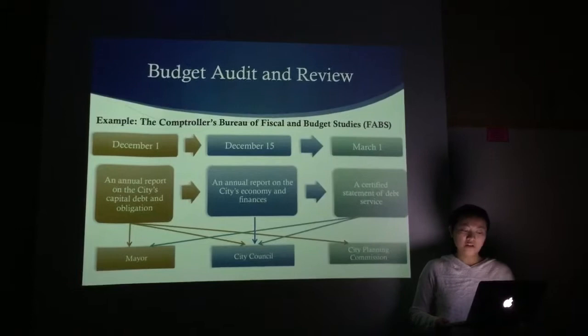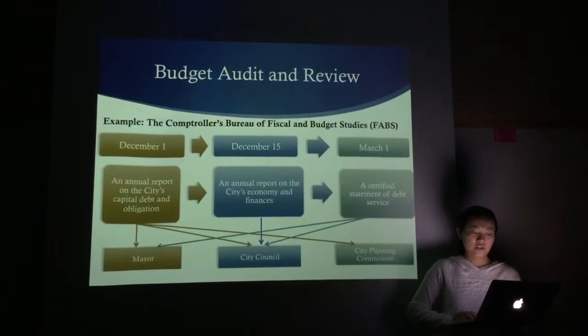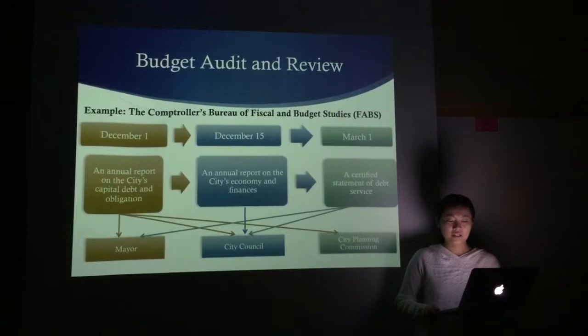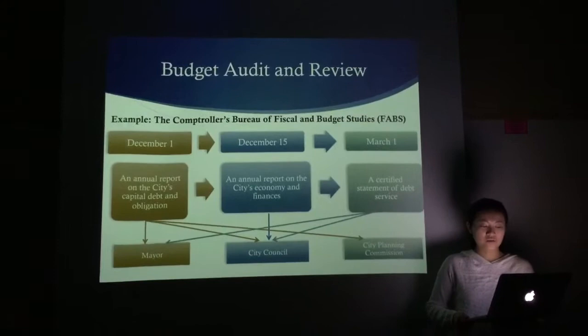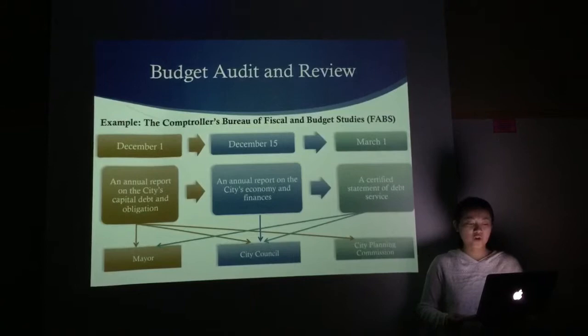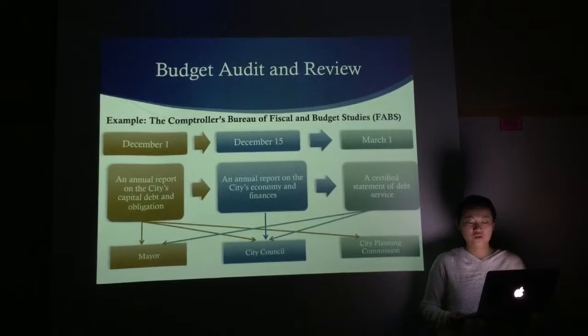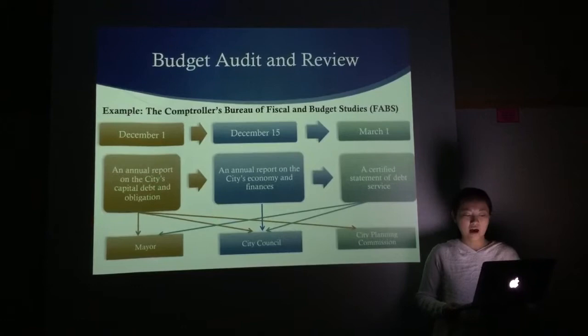The last step is budget audit and review. After budget implementation ends, local governments make reports, undertake audits, and review the concluded fiscal year. I will take the Controller's Bureau of Fiscal and Budget Studies, known as FABS in New York City, as an example to explain the budget audit. FABS monitors the city's revenue collections, expenditures, capital program, debt capacity, and economy. Based on the budget and financial plan documents, FABS conducts an overall review of the main components of the city's budget, focusing on important concerns such as the soundness of the city's fiscal and economic assumptions, changes in expense and capital budget priorities, and potential developments affecting the city's fiscal outlook.